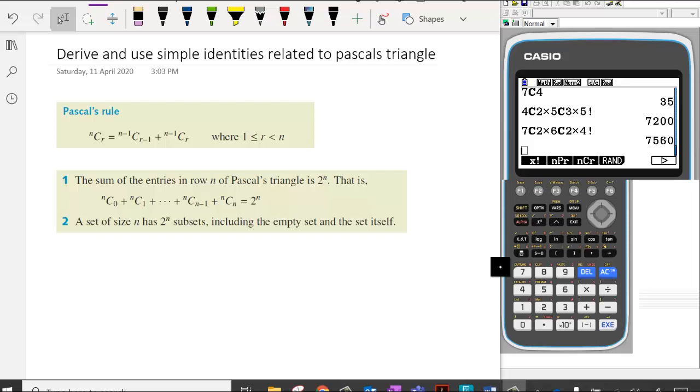In this lesson, we're looking to derive and use simple identities related to Pascal's Triangle. So it's pretty straightforward. This first statement here is just saying what we do in Pascal's Triangle. I'll show you in a second.